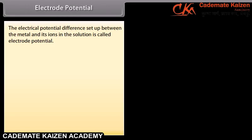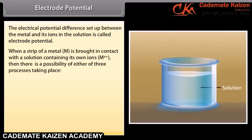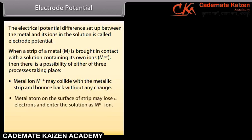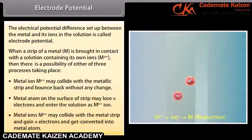Significance of salt bridge: Salt bridge allows the flow of current by completing the circuit. It allows the flow of ions but does not allow the flow of solutions. Salt bridge restores electrical neutrality of electrolytic solutions. The anions of the electrolyte in the salt bridge pass into the anodic solution, and cations pass into the cathodic solution to maintain electrical neutrality. Thus a salt bridge prevents accumulation of charges and maintains the flow of current in the circuit.